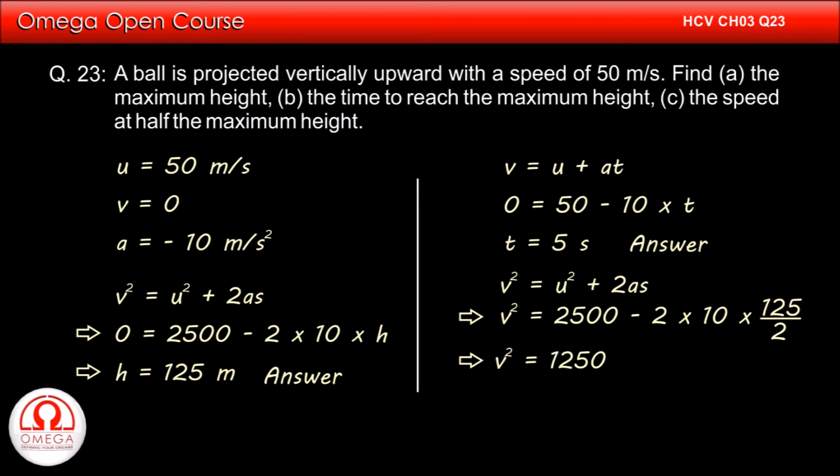Simplifying, we get v² = 1250, or v = 35.35 meters per second. Rounding it off to two significant figures, we get velocity = 35 meters per second. This is the answer to part C of the question.